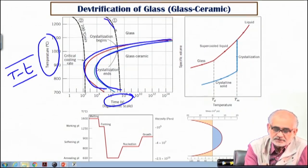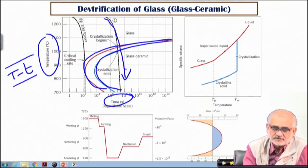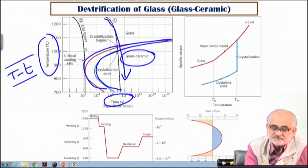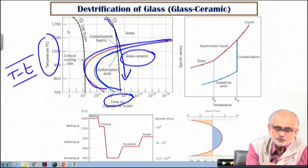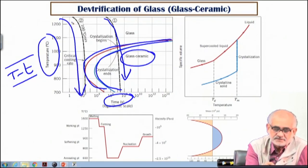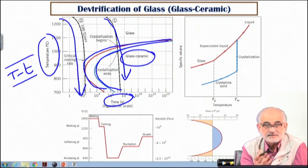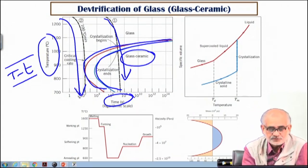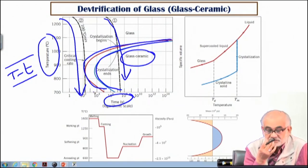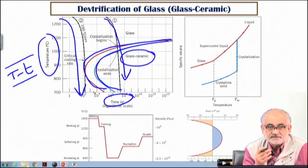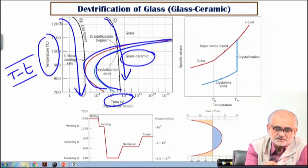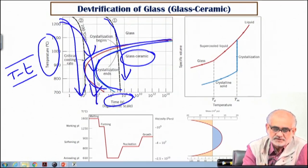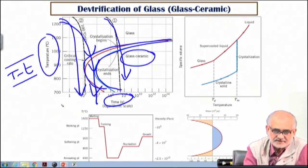If you cool relatively fast from a fairly less viscous liquid glass, you end up forming a glass at room temperature which will be very rigid but will remain completely glassy and non-crystalline. But if you adopt a cooling rate which is somewhat in between, then you will actually start the formation of crystallites, and you may end in a situation where you will have both glass as well as ceramic crystals.